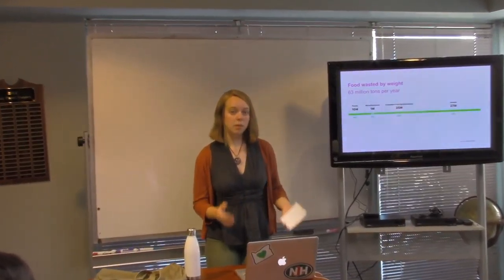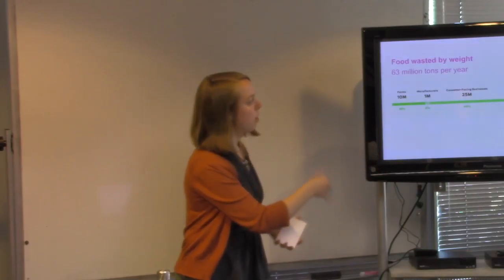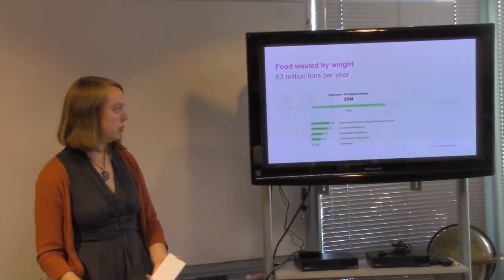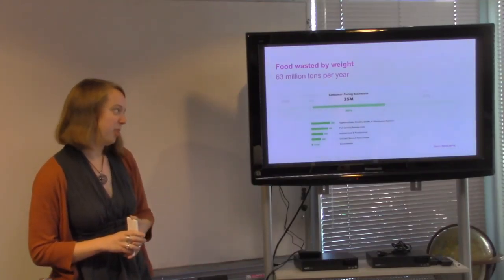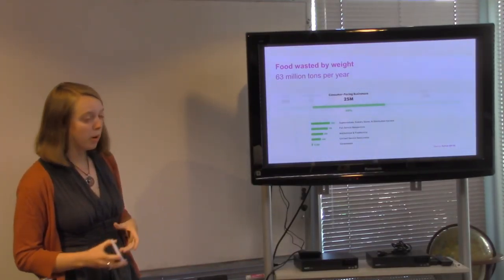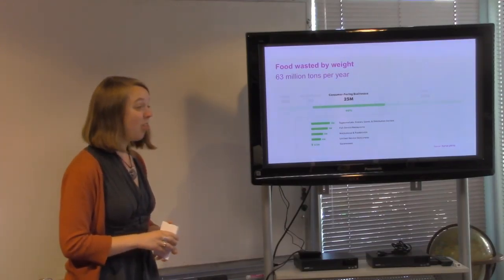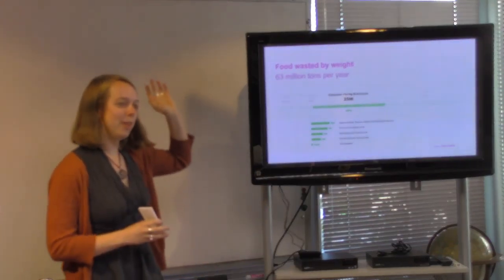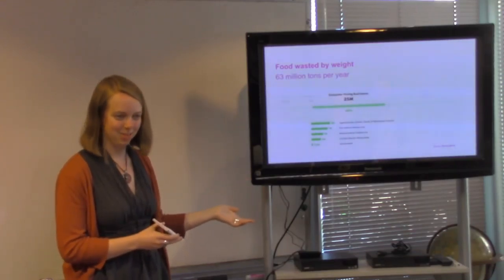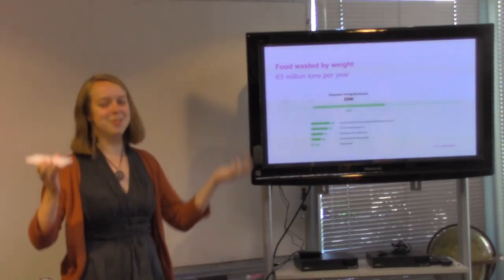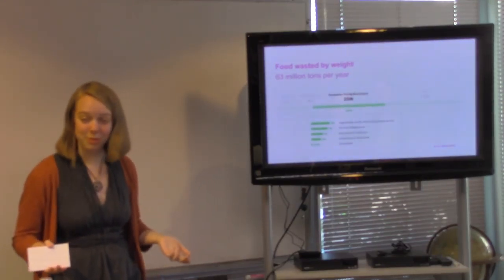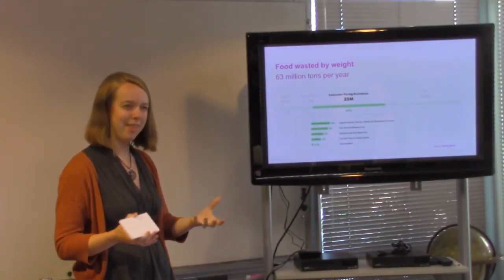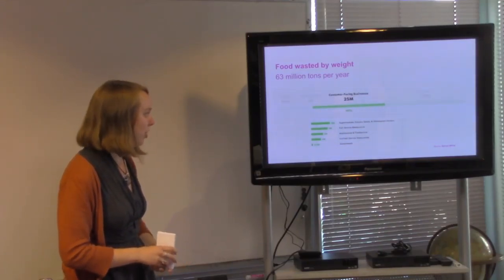And then the next one is consumer-facing businesses. So, there are about 42% in homes, 40% in consumer-facing businesses. This is anything from supermarkets and grocery stores to restaurants and even the government. The largest contributor here is supermarkets and grocery stores. And this is often because we have this sort of culture of abundance. We like to see way more than we would ever buy displayed at the grocery store. We see these displays with hundreds and hundreds of oranges and there's no way they're going to all be purchased before they go bad. But for some reason, our culture likes to see all of that there as available.